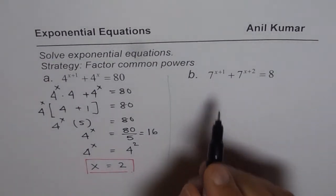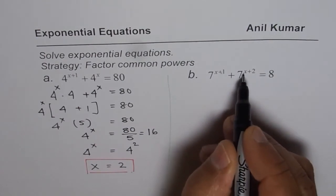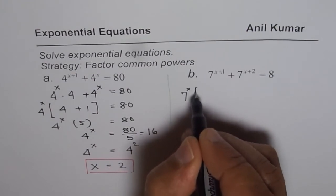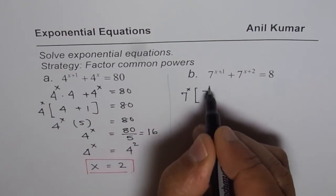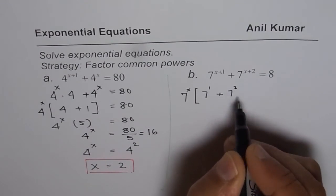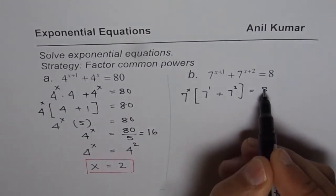Here what we have is 7 to the power of x plus 1, 7 to the power of x plus 2. We will factor 7 to the power of x. What do we get? We get 7 to the power of 1, which is 7, plus 7 to the power of 2. That is what we get, equals 8.